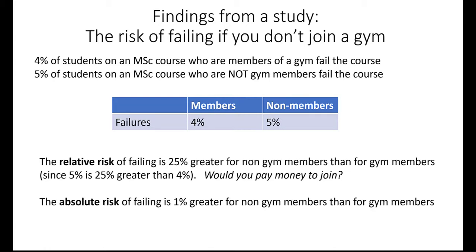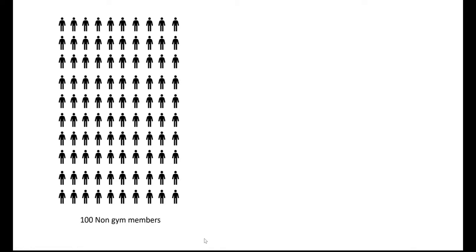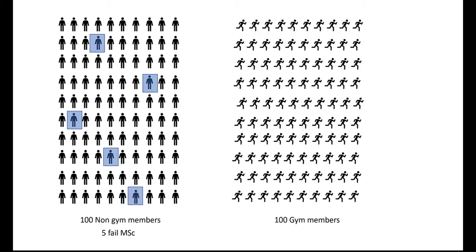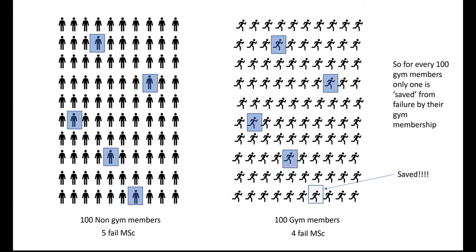So would you pay the money to join? Well, probably not. Because the absolute risk of failing is just 1% greater for non-gym members than for gym members. But interestingly, the 1% increase is not what we're told — we're told there's a 25% increase. Rarely, if ever, are we given these percentage numbers to compare. If we imagine 100 non-gym members, about 5 will fail the degree; compared to 100 gym members, where 4 will fail. Basically, joining a gym saves about 1 in 100 gym members from failing their master's degree — only 1 is saved from failure by their membership.